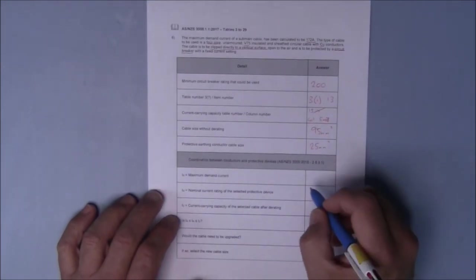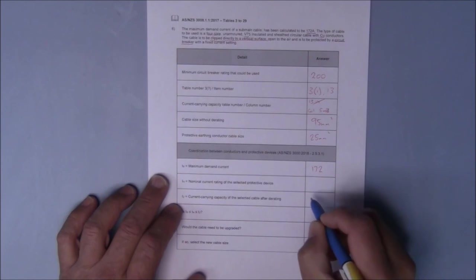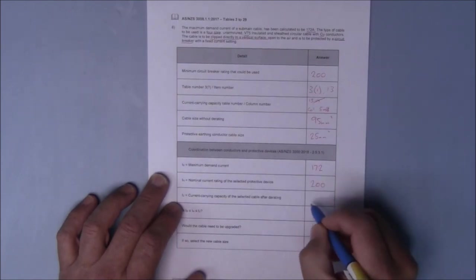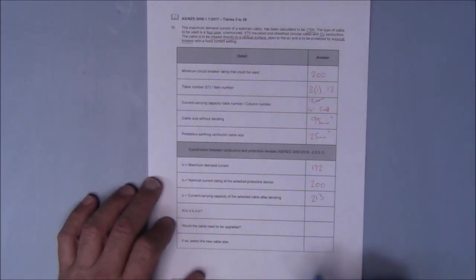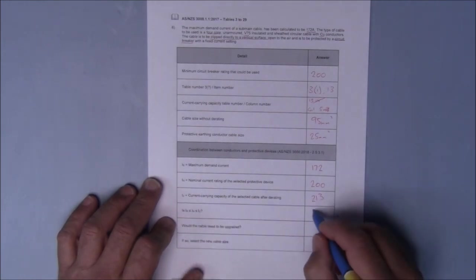Next we'll look at completing this. Our maximum demand was 172. Our circuit breaker was 200. And our current carrying capacity we spoke about was 213. Is IB less than or equal to IN, less than or equal to IZ? Yes.